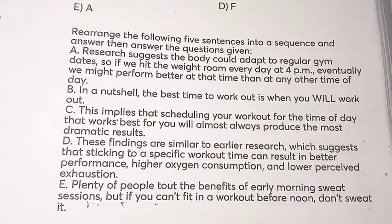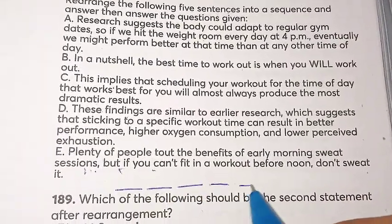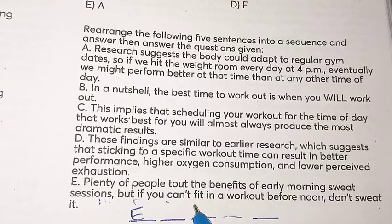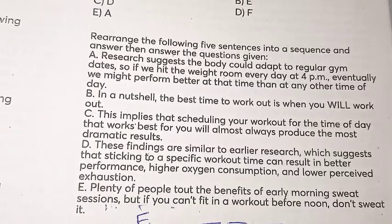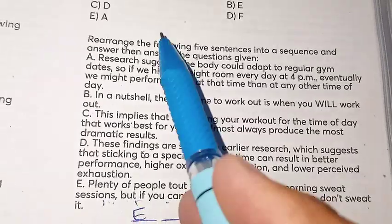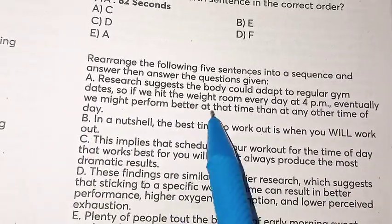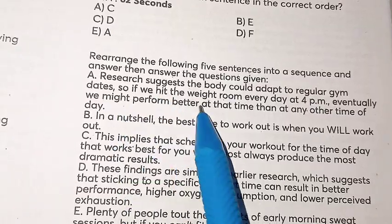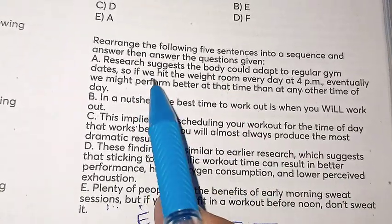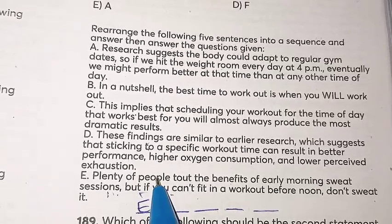We read E: 'plenty of people tout the benefits of early morning sweat sessions, but if you can't fit in a workout before noon, don't sweat it.' This is the introductory statement because we have already eliminated B, C, and D, and A introduces research. So E will be our first sentence, telling us it is not necessary to work out in the morning — you can do it in the afternoon too, because everybody has a different body clock.